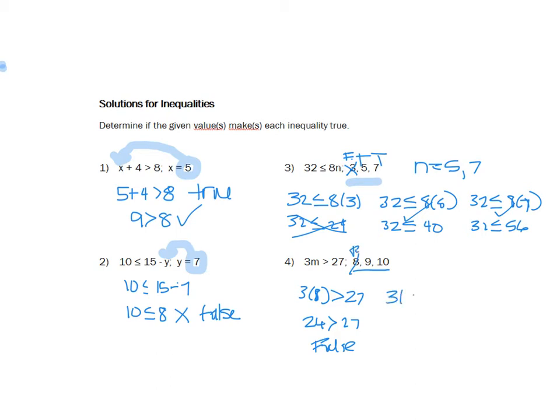Here I have 3 times 9 is greater than 27. 27 is greater than 27. Well, that doesn't make any sense. How can a number be greater than what it is? So this is false. And then we have 3 times 10 is greater than 27. That would give me 30 is greater than 27. And this is true. So in this case, m would have to be 10.